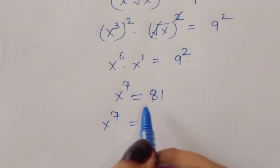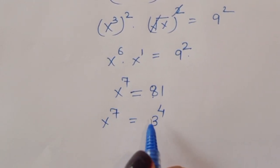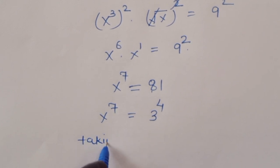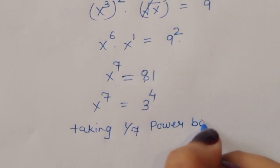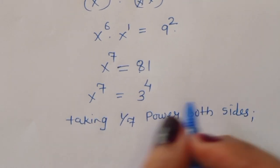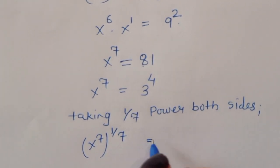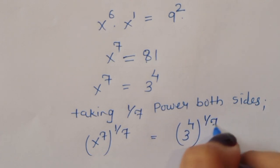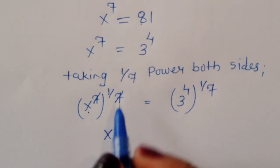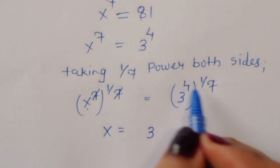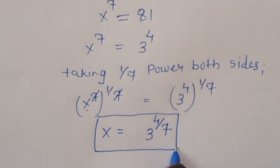We can write 81 in power form as 3 power 4. So x power 7 is equal to 3 power 4. Now taking 1 upon 7 power on both sides, the 7 cancels, giving x is equal to 3 power 4 by 7. This is the value of x using the first method. Now we are using the second method.